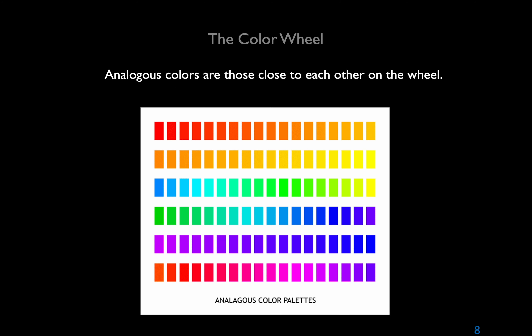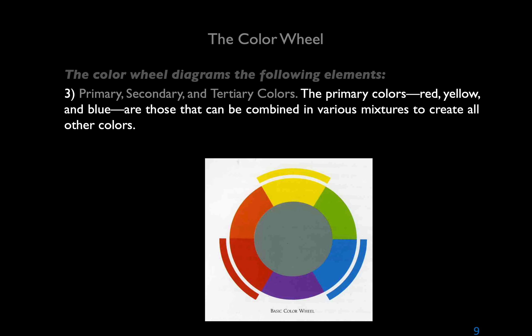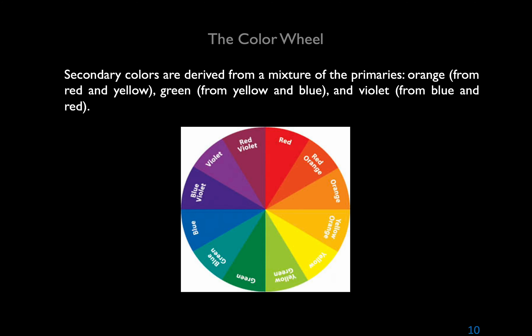Analogous colors are those that are close to each other on the color wheel. They are generally harmonious — as in the yellows, oranges, and reds of autumn foliage — and are often used to describe shifts from warms to cools created by sunlight and shadow. The color wheel also diagrams the primary, secondary, and tertiary colors. Primary colors — red, yellow, and blue — can be combined to create all other colors. Secondary colors are derived from mixtures of the primaries: orange from red and yellow, green from yellow and blue, and violet from blue and red.